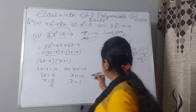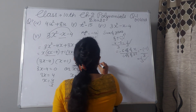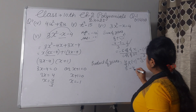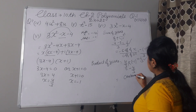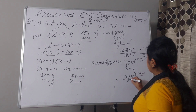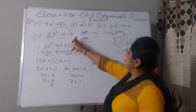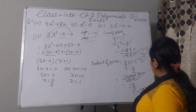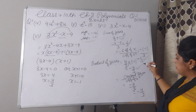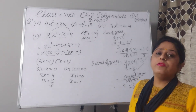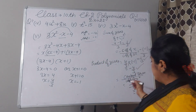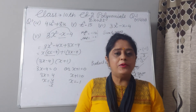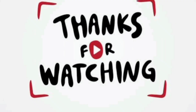Now we will verify the formula for product of zeros. Product of zeros is 4 by 3 multiplied by minus 1, which is minus 4 by 3. According to formula, product of zeros is constant term divided by coefficient of x square. Constant term is minus 4 and coefficient of x square is 3, so it is minus 4 by 3. Both sides give minus 4 by 3. Hence verified. Hope you understood, thank you and don't forget to like and subscribe.